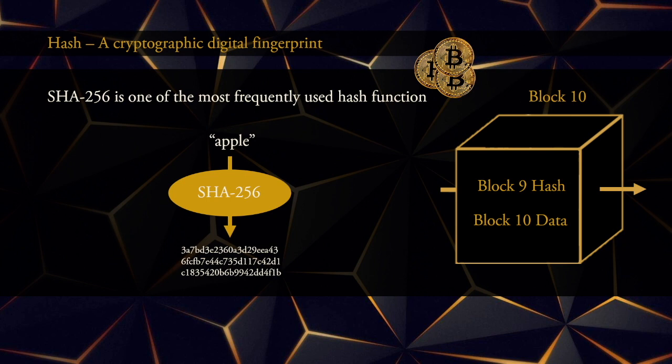To understand a blockchain, we will need to talk a little bit about cryptography. Broadly speaking, cryptography is all about encryption and decryption of data. However, for the purpose of this presentation, we only need to talk about one special type of encryption called a hash function. A hash function is a mathematical algorithm that can take any string of symbols and turn that into a fixed-length string of symbols.